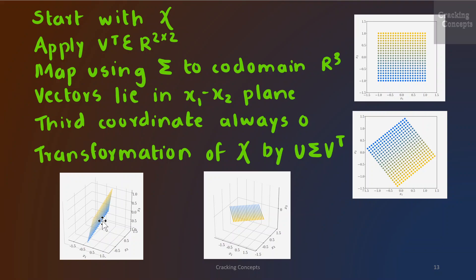The direct mapping of the vectors, that is the given grid, by A to the codomain R^3 equals the transformation of the grid by U, Σ, and V transpose, where U performed the rotation within the codomain R^3 so that the mapped vectors are no longer restricted to the x1-x2 plane. They still are on a plane as shown in the diagram.